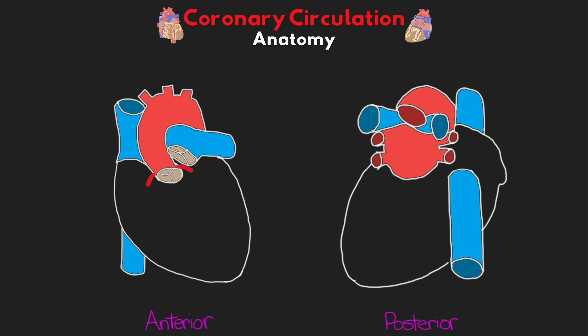Let's start talking about our left coronary artery, which branches off the left side of the aorta. The first small segment is referred to as the left main. The left coronary artery then bifurcates into two main branches. First, coming down, we have the left anterior descending artery, or LAD — also called the left anterior interventricular artery. This one travels inferiorly in the interventricular sulcus, hence the name, and this groove runs between the left and right ventricles on the anterior surface.